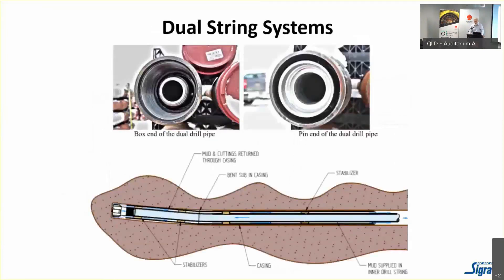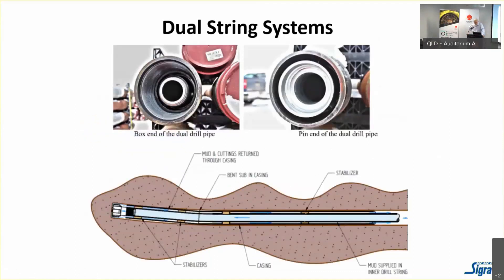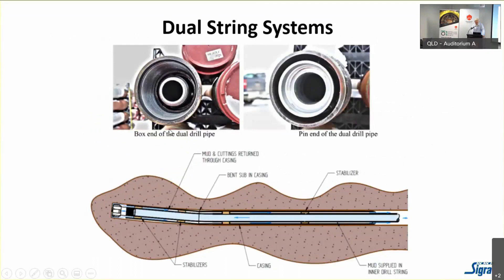Dual drill string systems are more of a civil-services type approach. You have a casing with a drill string inside it and a bit on the end. Mud is circulated through the bit and back down inside the casing, and direction is changed by twisting the casing around. These are of limited range because you'll end up with friction between casing and material without adequate lubrication. They fit a particular niche but are not really long-range systems.